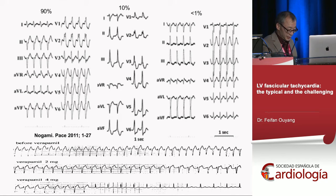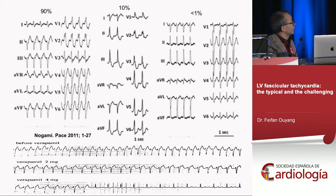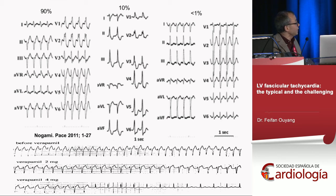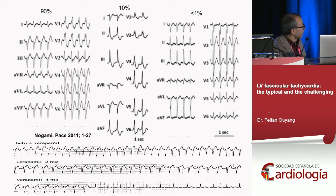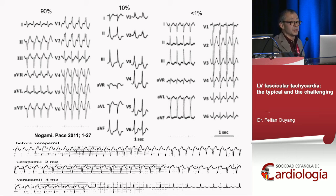The second type is from the anterior fascicle — left bundle branch morphology with inferior axis. The third, very rare type is upper septal ventricular tachycardia with almost narrow QRS morphology, similar to SVT. All three types can typically be terminated with verapamil — you can see the tachycardia slow down and then terminate.